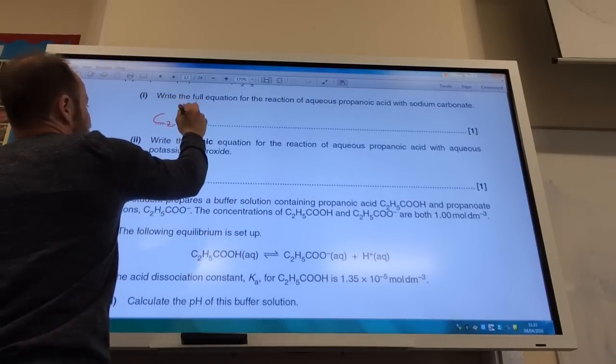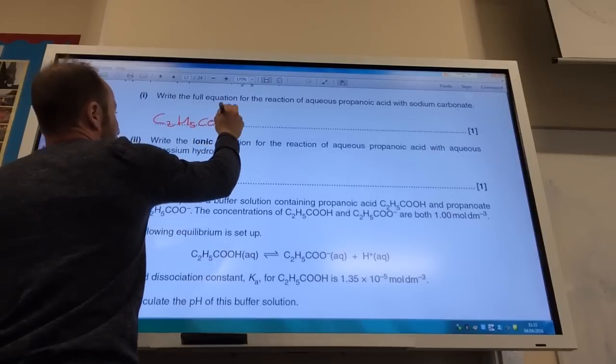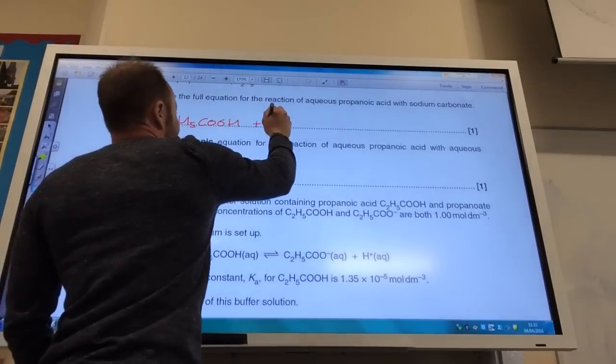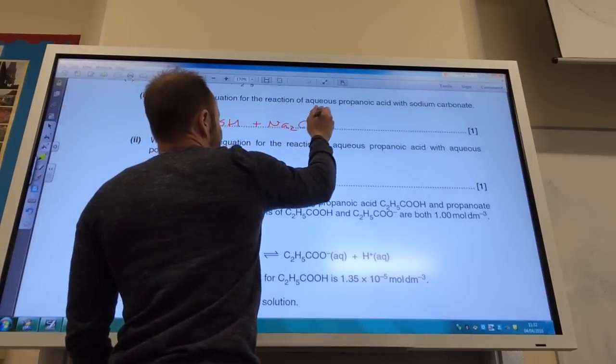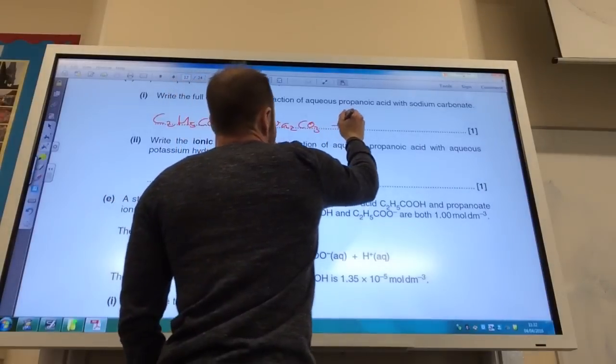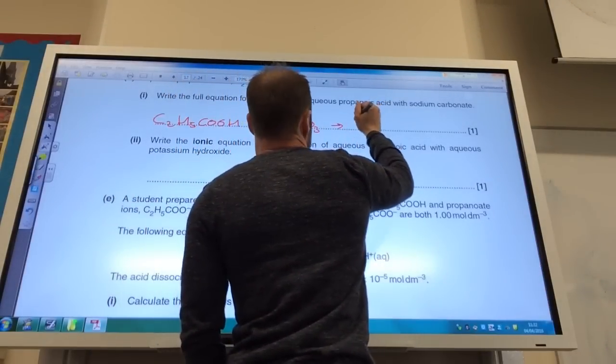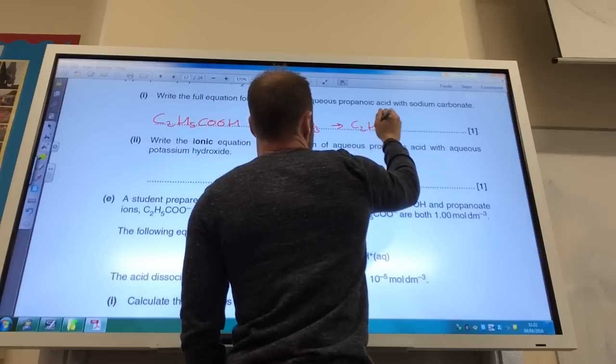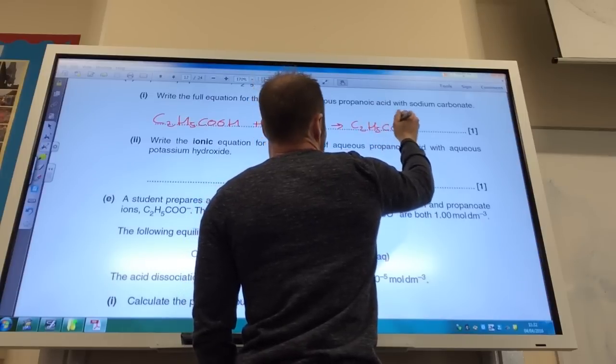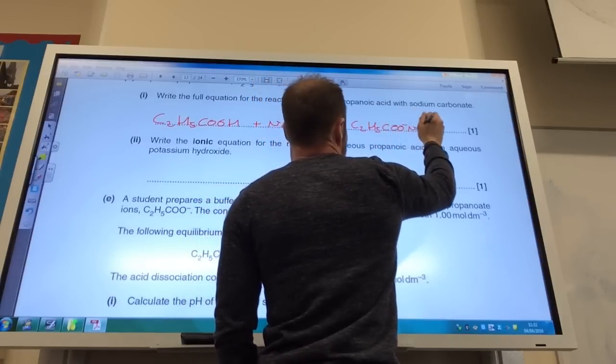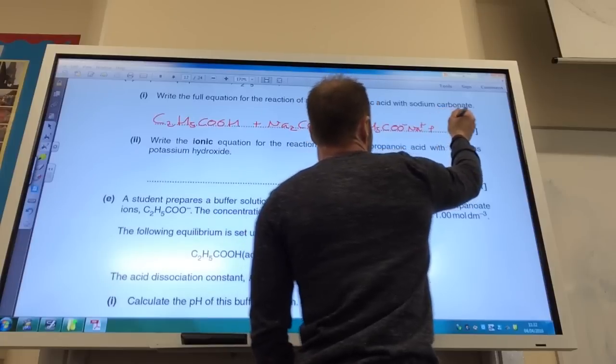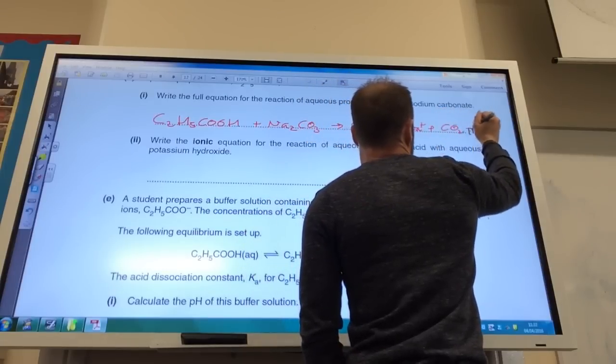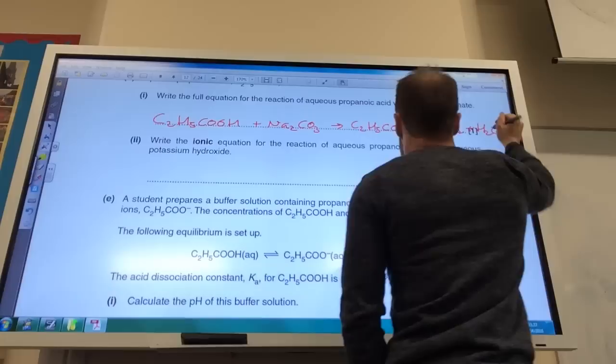We have got C2H5COOH plus Na2CO3. That's going to give me sodium propanoate C2H5COO minus Na plus. And it's a carbonate so I make CO2 and also H2O.